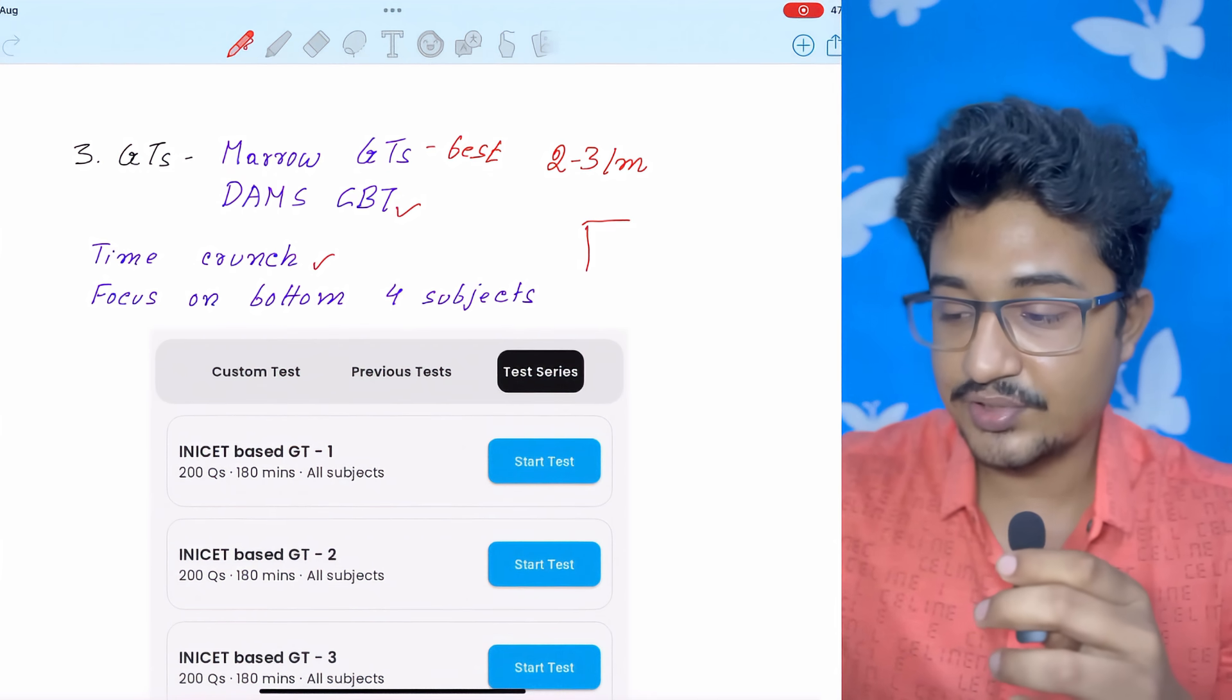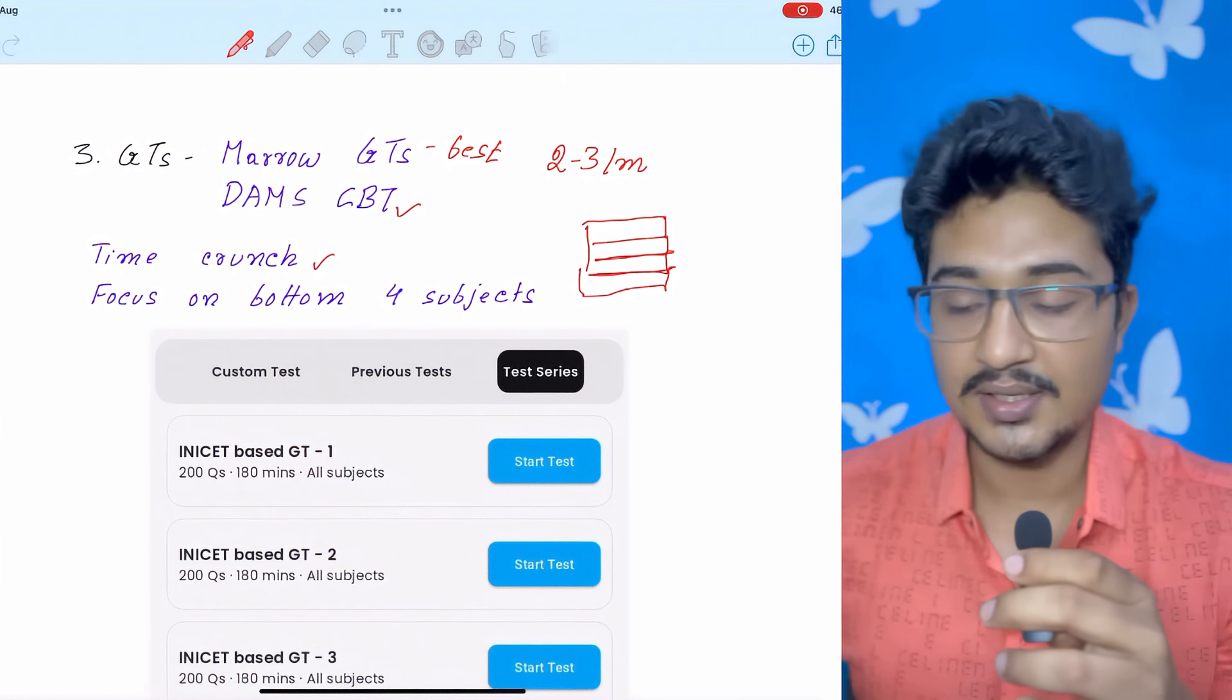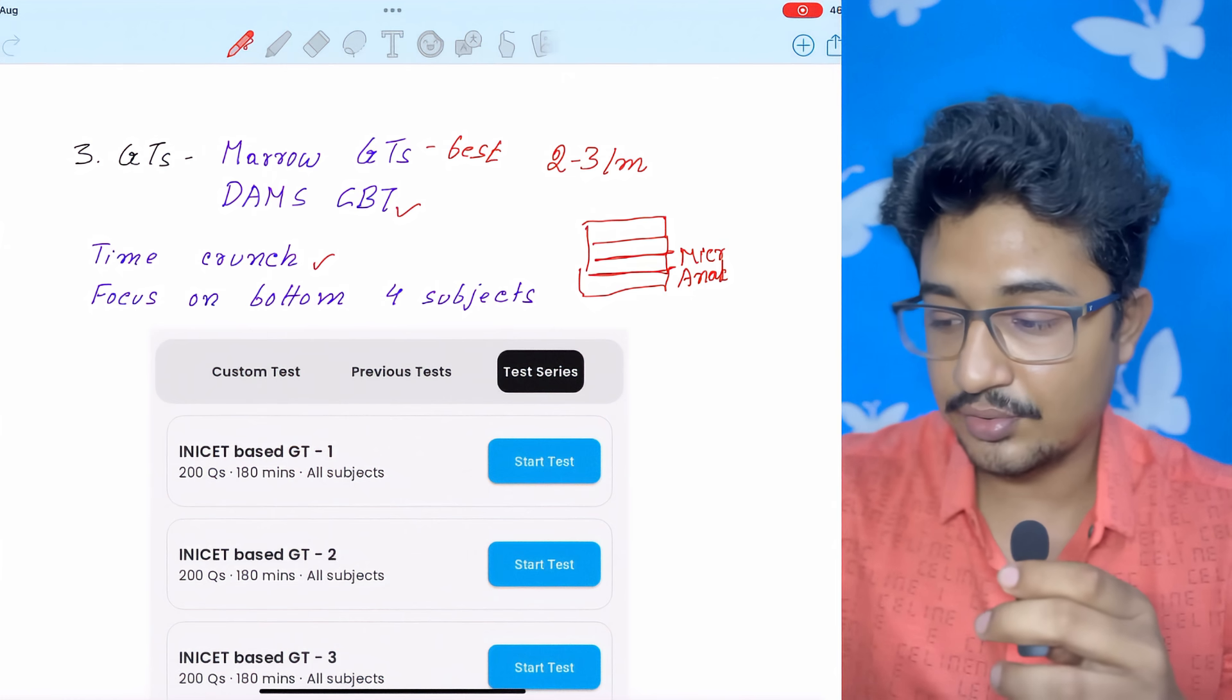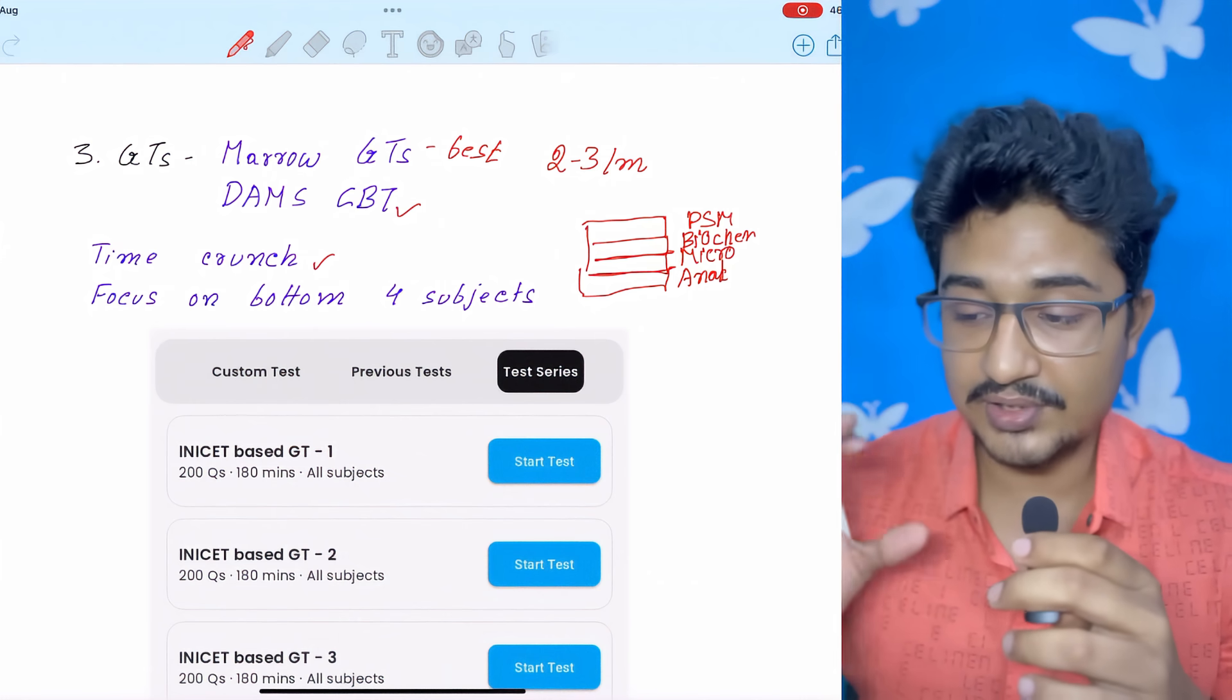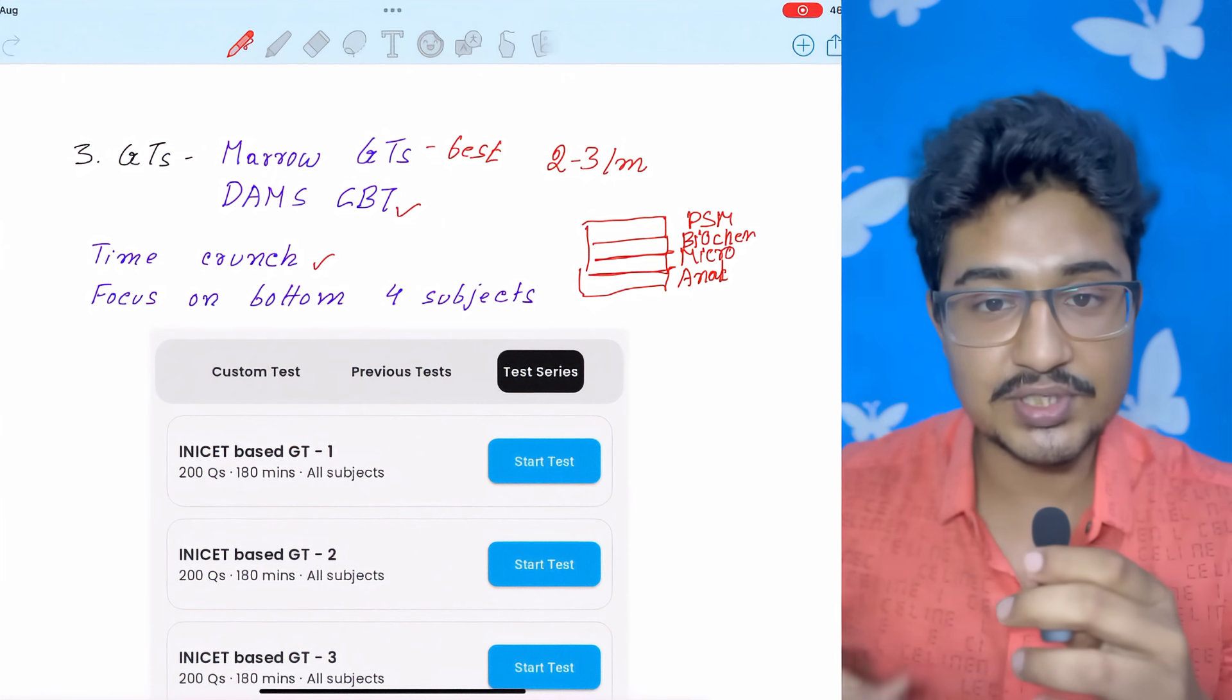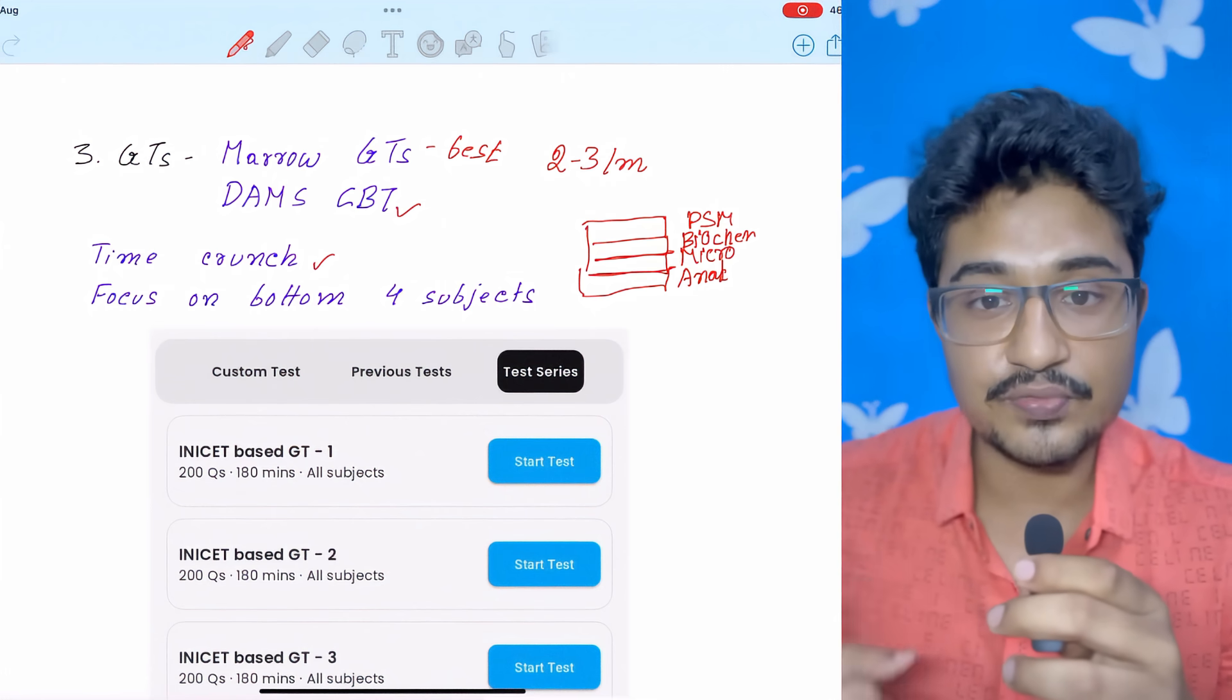And focus on the bottom four subjects. After giving the GT, while GT analysis, you will get the bottom four subjects where you have the least percentile. Focus on them. Like I have Anatomy, Microbiology, Biochemistry, and PSM in my bottom four subjects. I will focus on them before giving the next GT. Then automatically these subjects will come up. New set of four subjects will come down. Focus on them. Again repeat the same cycle. Like this, you will cover all your weaker subjects.